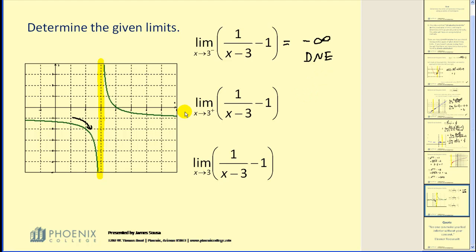The next one-sided limit, we're approaching 3 from the right. If we approach positive 3 from the right, you can see the graph goes up indefinitely — our y values are increasing without bound. Therefore, our limit would be equal to positive infinity in this case. Again, that limit does not exist.